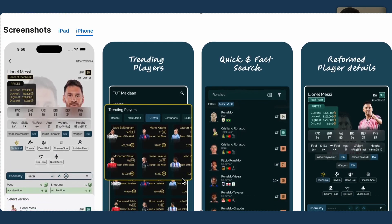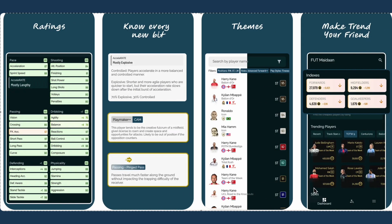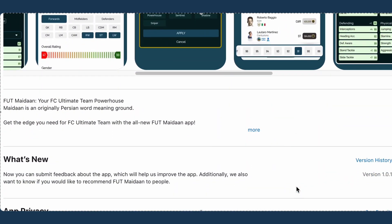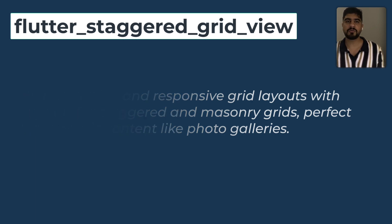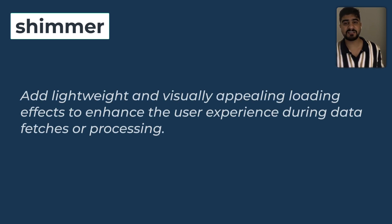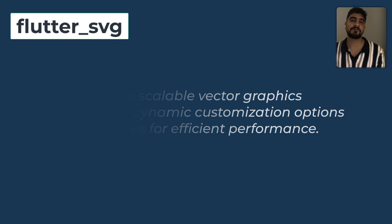I have personally used the modal bottom sheet package in my recent application called Futhnadan. The third is Flutter Staggered Grid View — build stunning and responsive grid layouts with support for staggered and masonry grids, perfect for dynamic content like photo galleries. Fourth was Shimmer, which adds lightweight and visually appealing loading effects to enhance user experience during data fetches or processing. And last was Flutter SVG, which renders crisp and scalable vector graphics effortlessly with dynamic customization options and small file sizes for efficient performance.